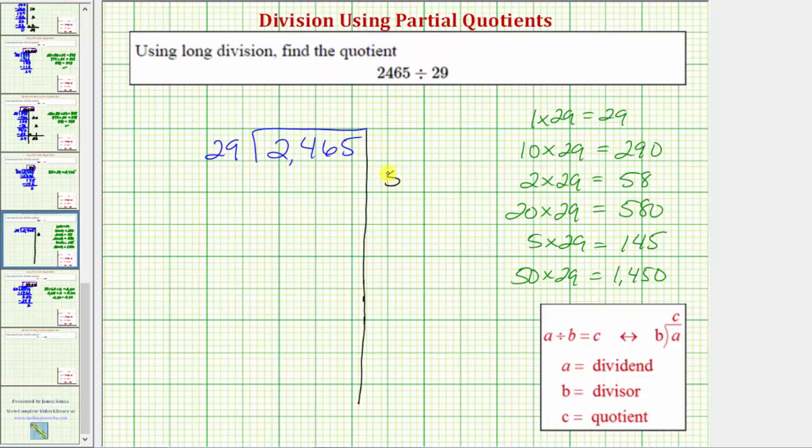So 50 will be our first partial quotient. So we'll record a 50 here on the right. Now we'll multiply by the divisor. 50 times 29 equals 1,450. And now we subtract.